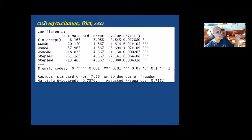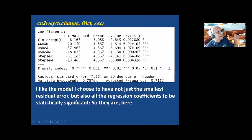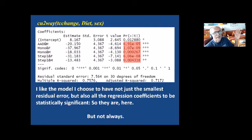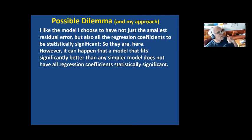Now, if we look at the regression coefficients — this is also displayed in the CU2A output — all these p-values are significant for all the coefficients. I personally like the model I choose to have not just the smallest residual error, but also all the regression coefficients to be statistically significant. But not always — this doesn't always happen. A model that fits significantly better than any simpler model can have some regression coefficients that are not statistically significant.